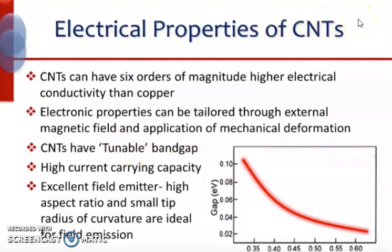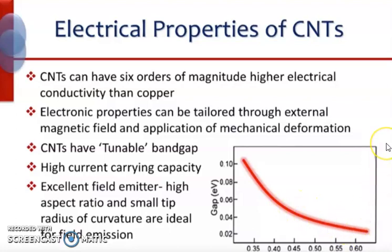Carbon nanotubes can have 6 orders of magnitude higher electrical conductivity than copper because of the symmetry of graphene. The electronic properties can also be tailored through an external magnetic field and application of mechanical deformation. Carbon nanotubes also have a tunable band gap — as shown in the graph, the band gap is smaller for larger nanotube radius. Furthermore, carbon nanotubes have high current capacity and excellent field emission, where high aspect ratios and small tip radius of curvature are ideal.